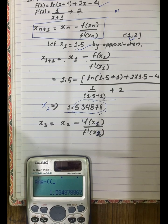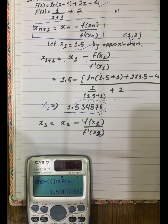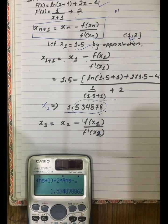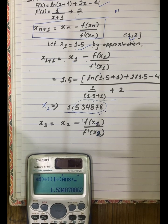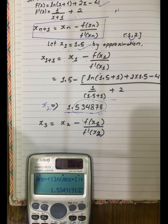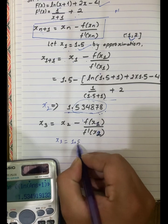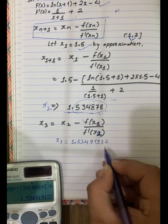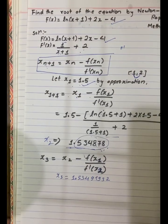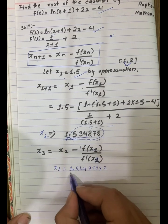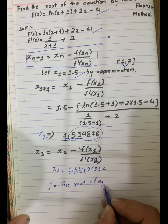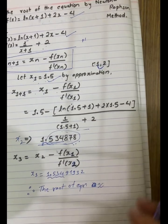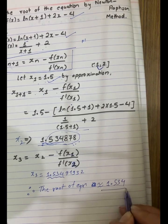Computing ln(answer + 1) + 2 × answer - 4, divided by 1/(answer + 1) + 2, gives 1.53491932. The root of the equation is approximately 1.534.